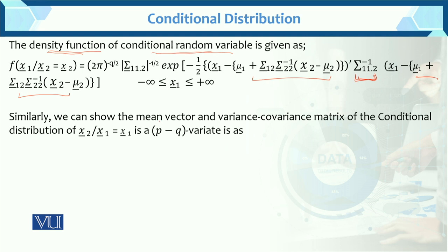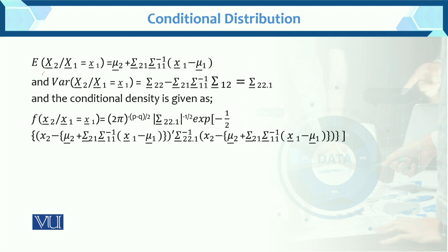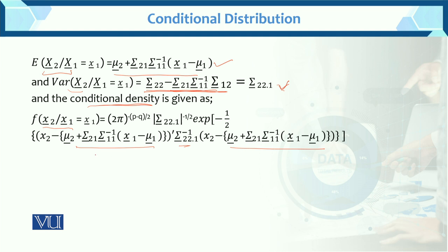Similarly we can show the mean vector and the variance-covariance matrix of the conditional distribution of x2 given x1. This is a (p−q)-variate distribution. The expected value of x2 given x1 is the conditional mean, and the variance of x2 given x1 equals sigma 2 dot 1. The conditional density of x2 given x1 involves x minus mu and the variance-covariance matrix, and this is the general case of the conditional distribution when x2 given x1.